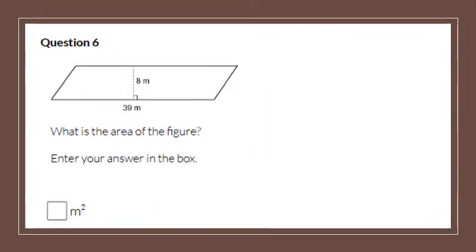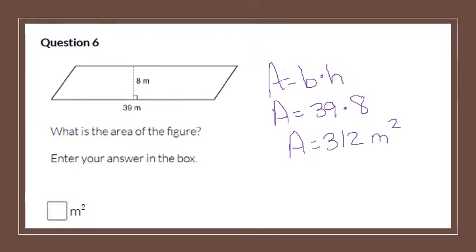Number 6. What is the area of this one? Very straightforward. We've got our base times our height. So our base is 39 and our height is 8. All you have to do is multiply those. And you do get 312 meters squared.